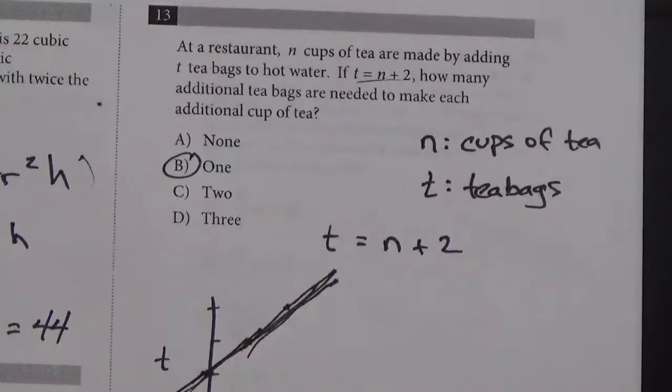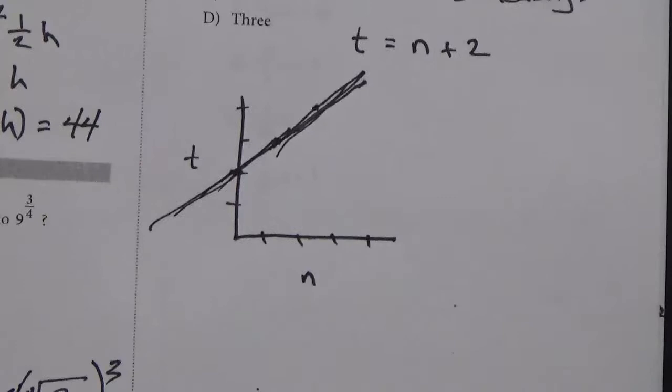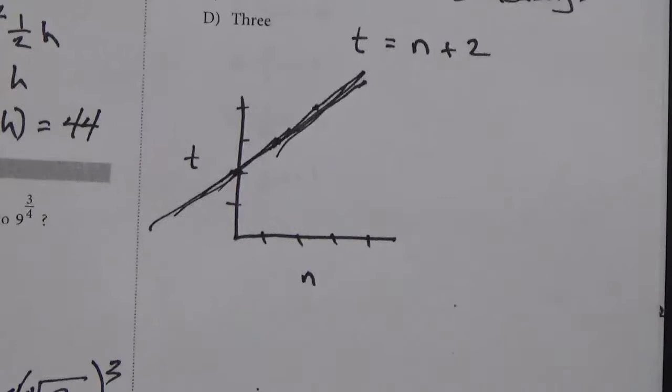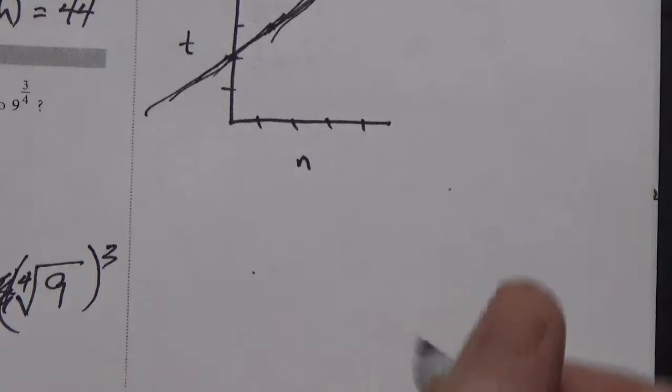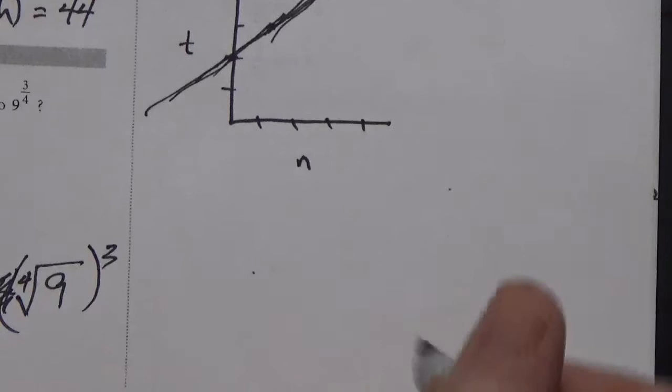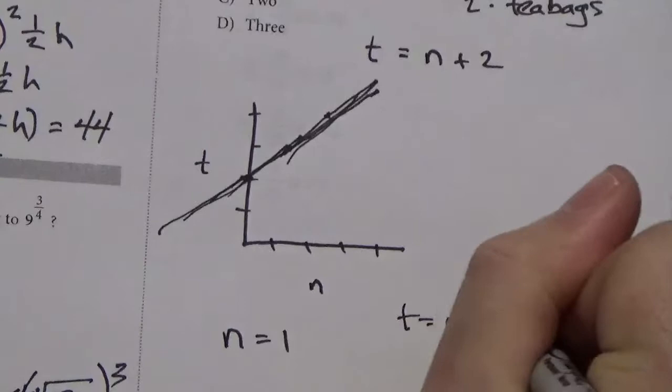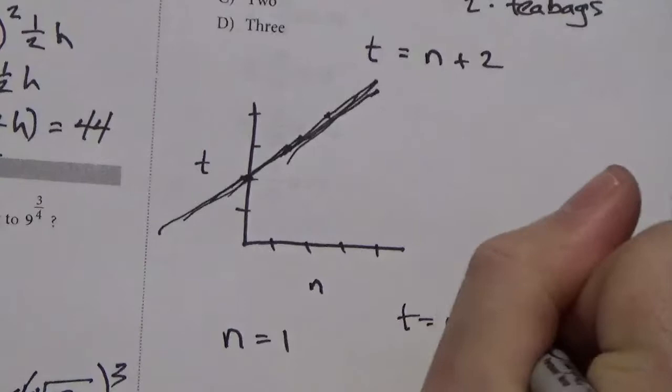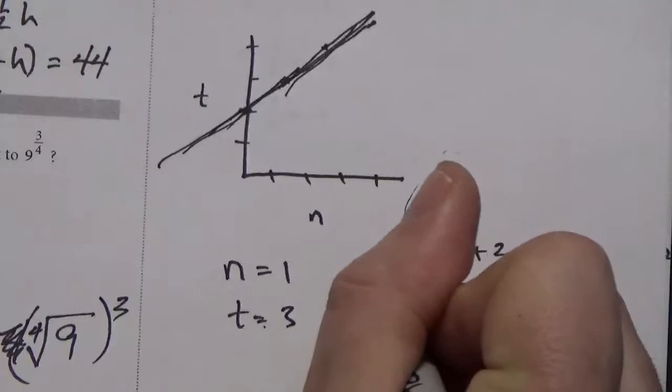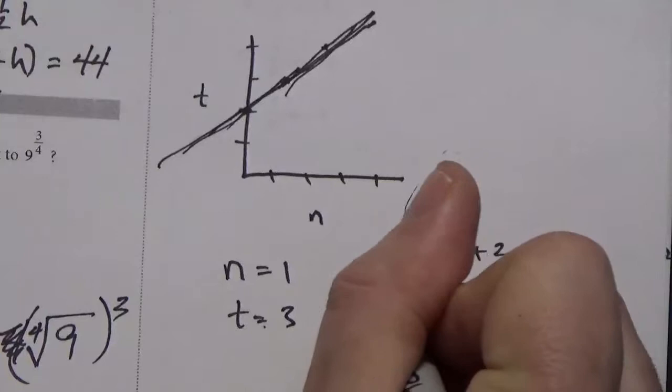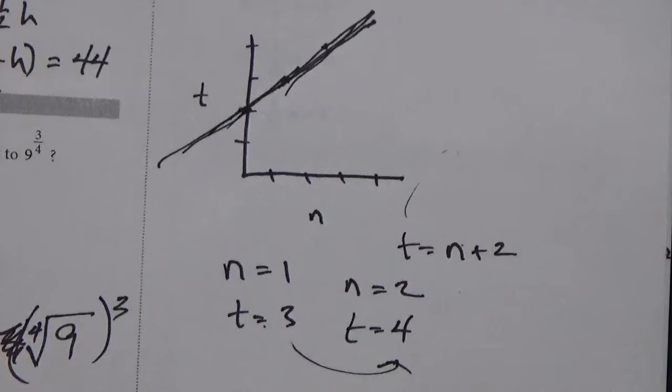I kind of hate this question because it makes no sense. This function doesn't make any sense. Anyway, another way to do this question would just be to try out some numbers. You could say, let's see how many tea bags you need for 1 cup of tea. So, when n equals 1, you need to know that t equals n plus 2. So, t would equal 3. So, 1 cup of tea, 3 tea bags. Very strong tea. Now, the question is saying, I want to make 1 additional cup of tea. So, if I change n to 2, what would t change to? Well, put 2 into the equation, you get t equals 4. The question is asking how many more tea bags we need. I went from 3 to 4, which is also just an increase of 1. So, that's another way to do this question.